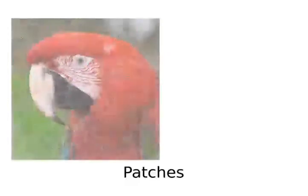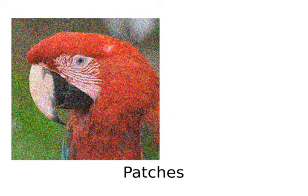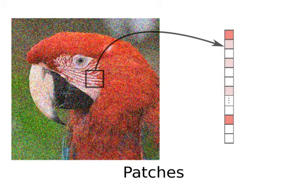We now illustrate the use of the covariance tree in the context of non-local patch-based image denoising problems. In this case, the points indexed in our structure are 7x7 color image patches, considered as vectors in a 147-dimensional space.